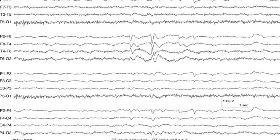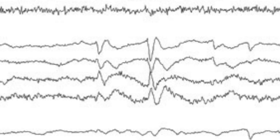This is another EEG with anterior-posterior bipolar montages. The background waves are the alpha waves, and these sharp waves clearly stand out from the background — a characteristic of epileptiform discharge. In this EEG, you can see a typical case of focal interictal spikes with waves. All the sharp waves are followed by the after-coming slow waves. They clearly disturb the background and also form a sensible electrical field of the brain.